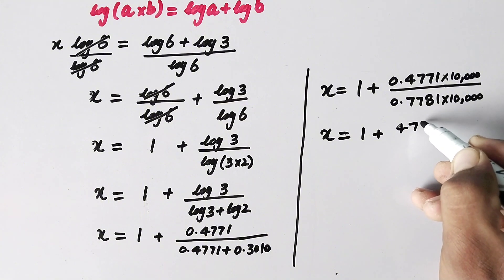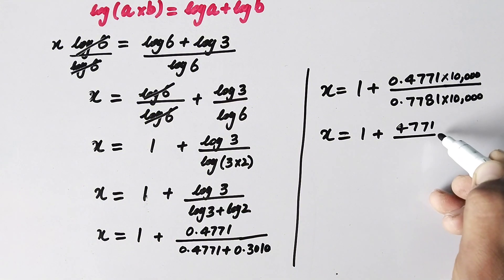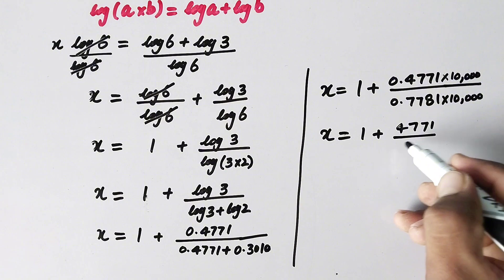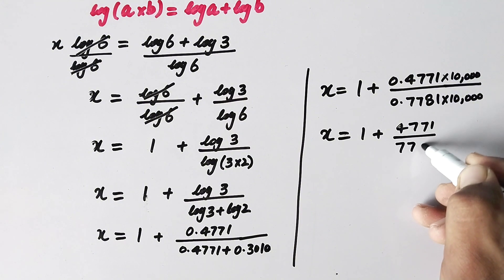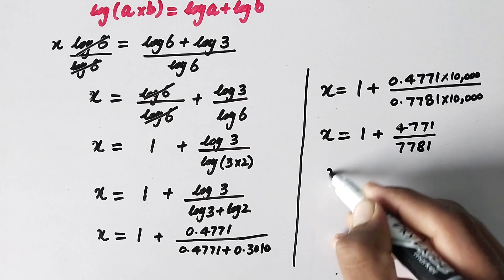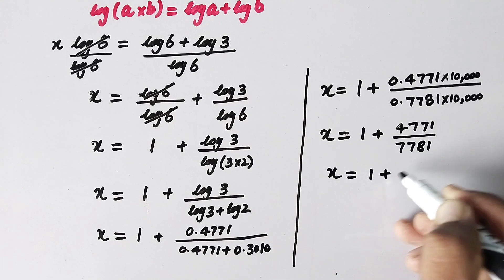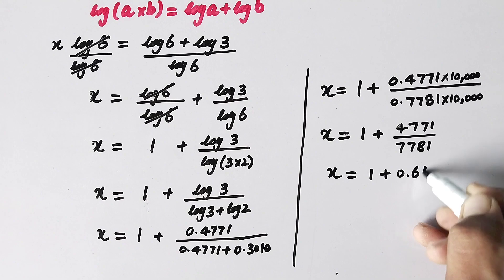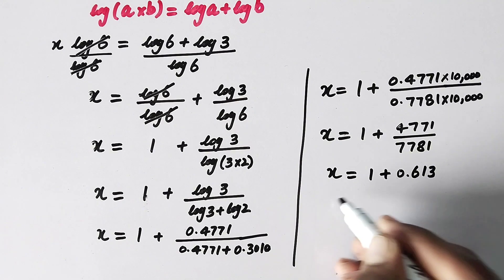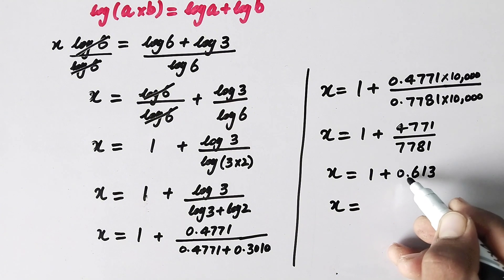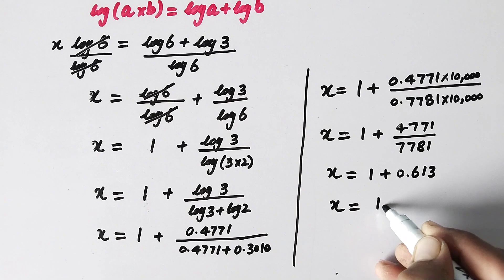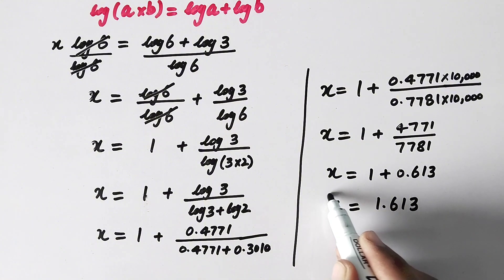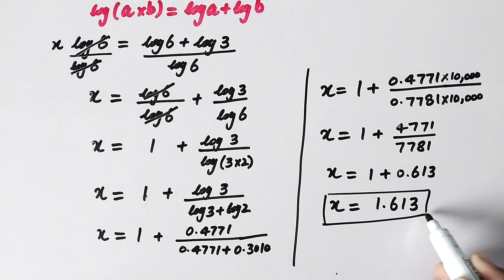In the next step, x is equal to 1 plus 4,771 over 7,781. The division of these values is equal to 0.613.